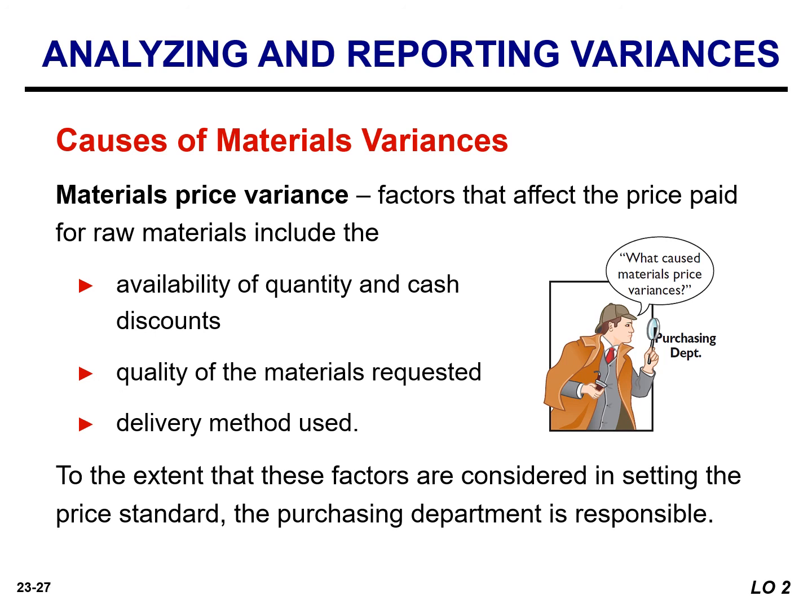However, a variance may be beyond the control of the purchasing department — for example, prices may rise faster than expected. There are also times when a production department may be responsible for the price variance, such as when a rush order forces the company to pay a higher price for materials.